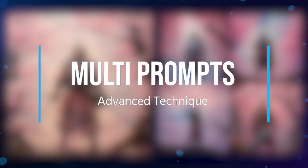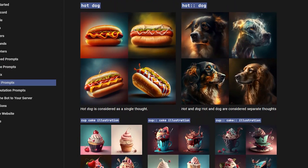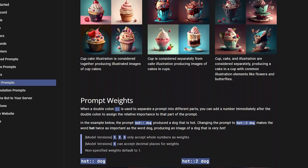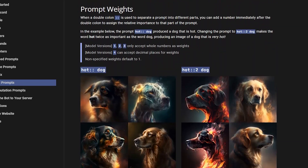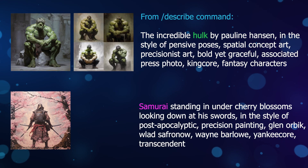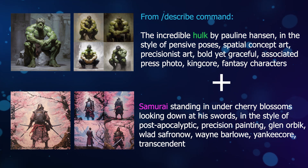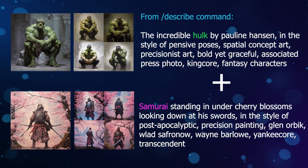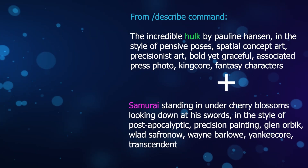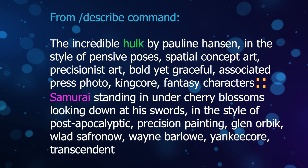Now for my favorite part: instead of using the blending command to mix two images, we'll use an advanced prompting technique called multi-prompting. This method gives us more control compared to blending but requires a little more effort. I use the descriptions Midjourney gave us of our first and second image to create an entirely new image. We use the double colon symbol to separate the descriptions.